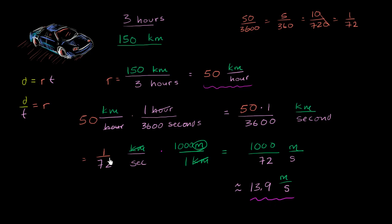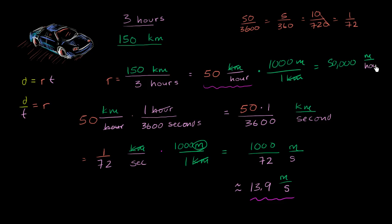But saying it's going 1/72nd of a kilometer per second doesn't really make sense. And if I tried to think about it in terms of meters per hour, that would also be strange. Using the same conversion — 1,000 meters per kilometer, kilometers cancel — we'd get 50 times 1,000, which is 50,000 meters per hour. That's a crazy large number and hard to conceptualize. So kilometers per hour and meters per second seem useful for describing this rate, while kilometers per second and meters per hour seem unusual.